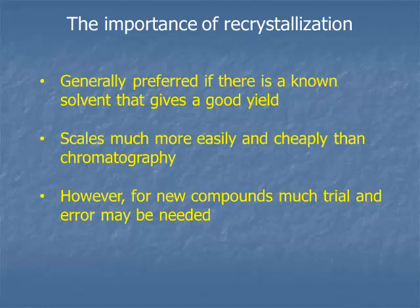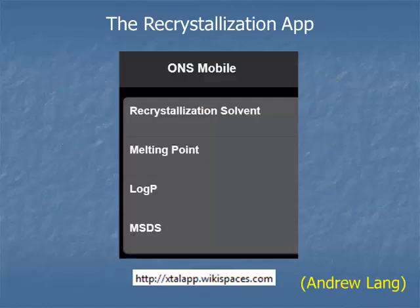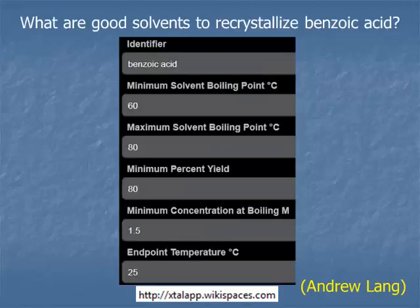What we thought we would do is create an app that would reason out what information it needs and then figure it out. The app is available and should run on most mobile devices, laptops, whatever — it was built basically for a mobile interface. There's a bunch of things here, but if you hit the recrystallization solvent button, it will default to this. We tried to make it as convenient as possible.